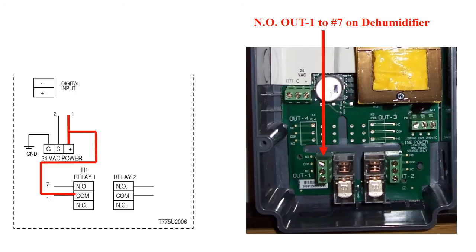Relay, or out number 2, is not used in this installation. Next to the COM is a normally open terminal, with the number 7, which indicates the corresponding terminal connection on the dehumidifier, as mentioned earlier.